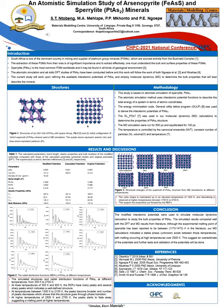At higher temperatures of 2500 and 2700 K, the peaks start to fade away suggesting a melting point at a higher temperature. We further validated the potentials using the structural changes of the supercell at different temperatures, where Figure 3 illustrates that the cubic shape is maintained up to an elevated temperature of 1300 K, and disordering is observed at high temperatures between 1700 to 2700 K. This supports the proposition put forward by the RDFs.